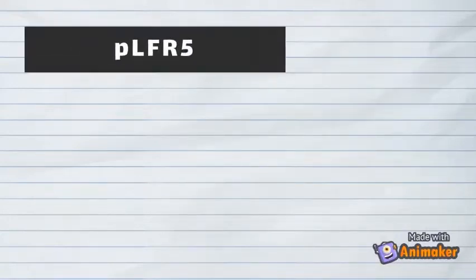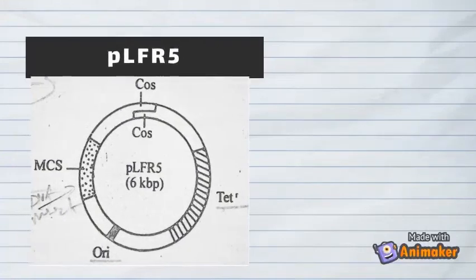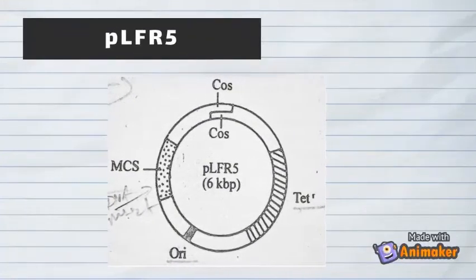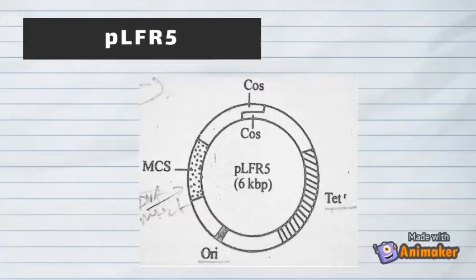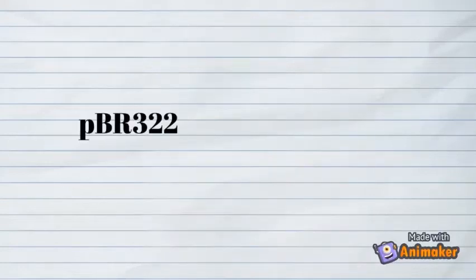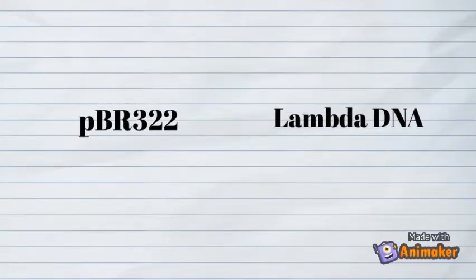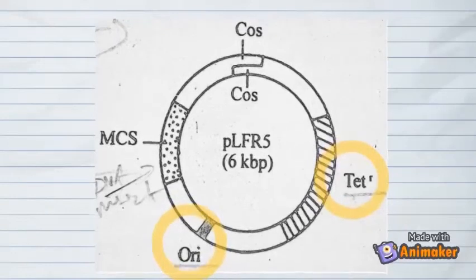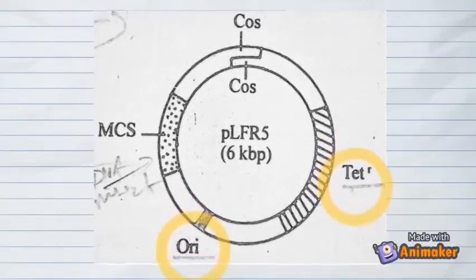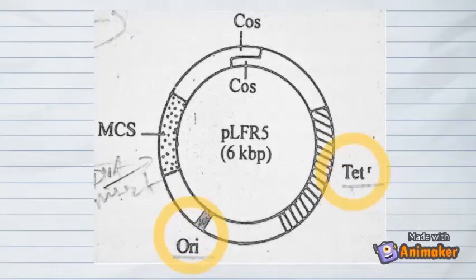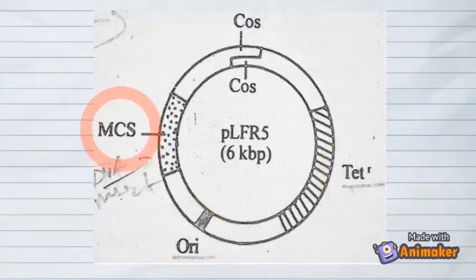The last cosmid to be introduced is called pLFR5, which has a size of 6 kbp. They are suitable for cloning large DNA fragments up to 45 kbp. They are derivatives of the plasmid pBR322 and their two cos sites are derived from lambda DNA as well. The origin of replication and tetracycline resistance gene are derived from the plasmid, and the multiple cloning site is located between the origin of replication and the cos site.